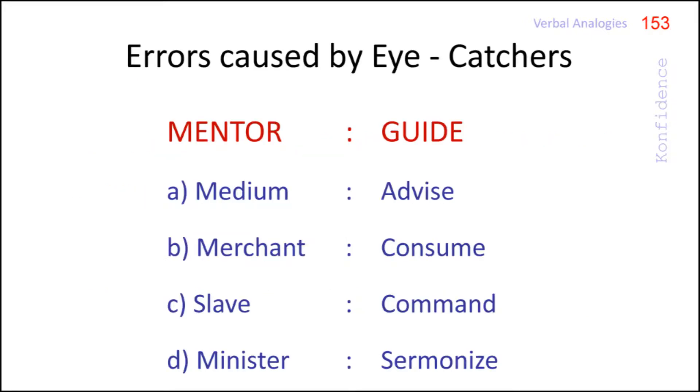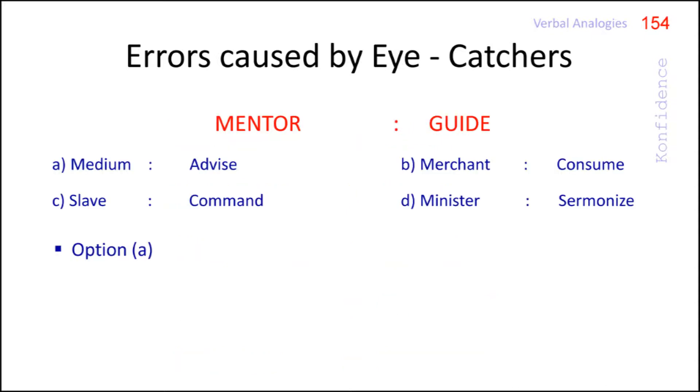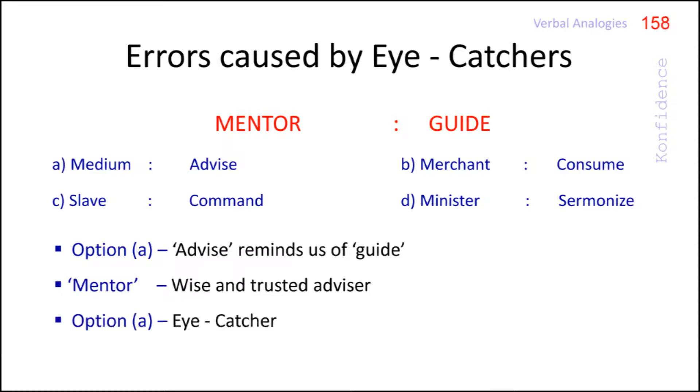Look at the example given in the slide. The analogy given in the question is mentor, guide. When we glance at this analogy, option A will attract our first attention because the word advice reminds us of guide. When we guide a person, we give him many pieces of advice. A mentor is a wise and trusted advisor and helper of an inexperienced person. So option A is an eye catcher that leads us to the error.